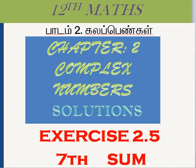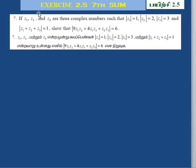2.5. 7th solution. X side is 2.5. Sum number 6 and 7, it has two five. If Z1 and Z2, Z3 is 1 less value. Z1 plus Z2 plus Z3 is 1 less value equal to 1.